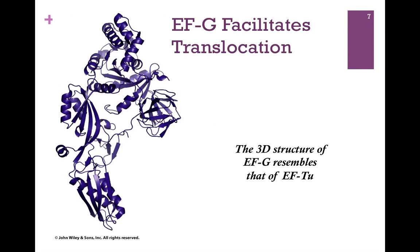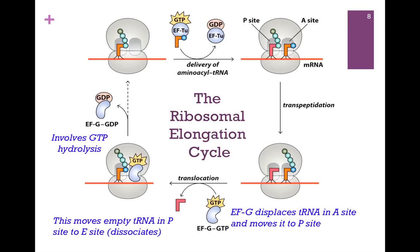For that, we need to move our ribosome. And here's where the next elongation factor comes into play — EFG. It facilitates translocation; that is, we want to shift through the ribosome by one codon. The three-dimensional structure of EFG resembles that of EFTU bound to its tRNA, and so you can see how it can fit within the ribosome.